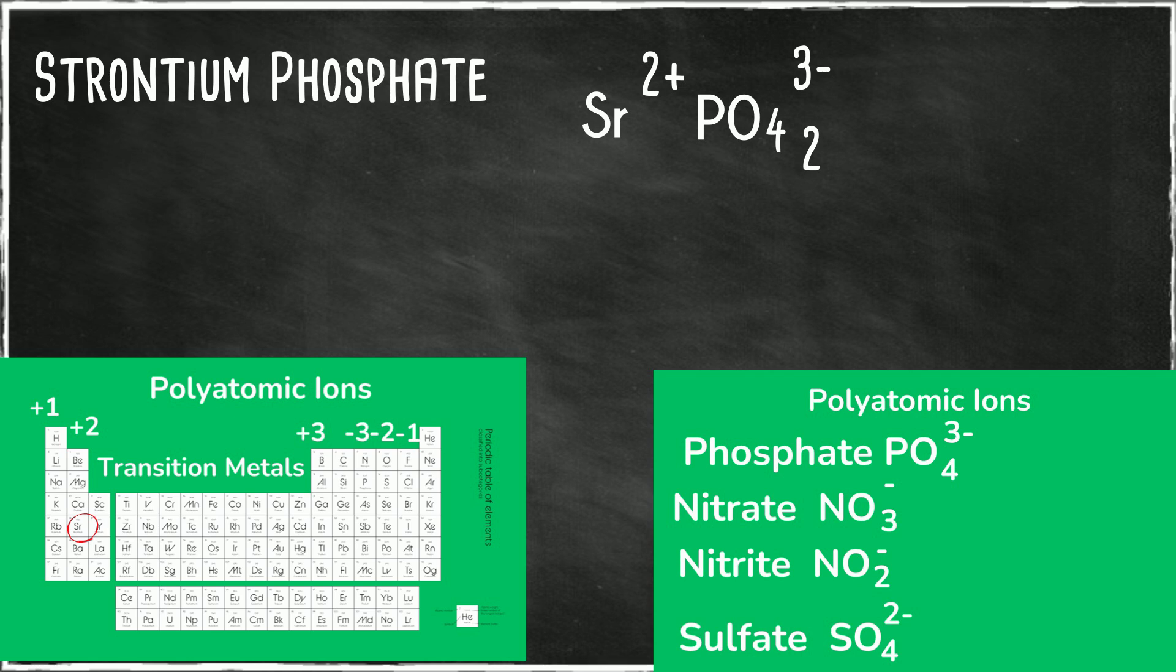So the two goes with phosphate. The three goes with strontium. So now we will write it Sr3 telling you that you have three strontiums and then phosphate PO4 in parentheses and it will be a two on the outside of that telling that you have two of those.